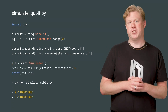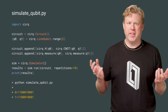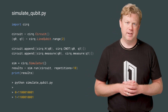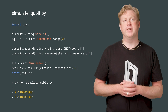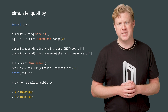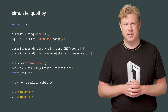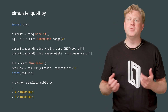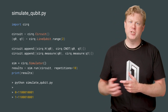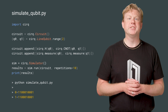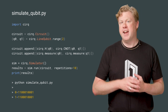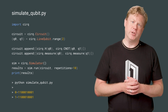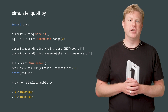Once we've constructed a quantum circuit, what do we do with it? In CIRQ, you can perform a simulation of the circuit. Here we run the circuit ten times and see the measurement results. Measurement results in quantum computers don't always give the same values of bits — one run of the circuit may result in the output being zero, and another in it being one. Here we see that the measurement results differ for each run of the simulation.